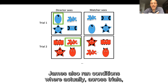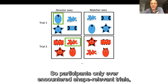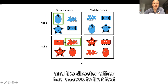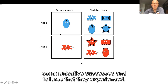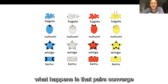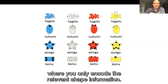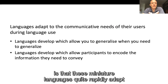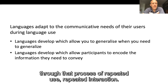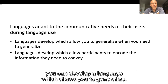James also ran conditions where across all trials, only shape information ever needed to be conveyed. The director either had access to that fact or had to infer it through the pattern of communicative successes and failures. In both cases, pairs converge on simpler lexicons where only the relevant shape information is encoded. So these miniature languages quite rapidly adapt to the communicative needs of their users through repeated use and interaction. If you need to generalise, you can develop a language that allows you to generalise, and languages developed during interaction allow participants to encode exactly the information they need to convey.